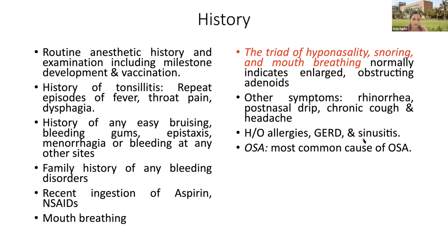In history, we assess routine anesthetic history like developmental milestones, vaccination status, history of repeated tonsillitis episodes including fever, throat pain or dysphagia, easy bruisability, bleeding gums, epistaxis, family history of bleeding disorders, and recent ingestion of aspirin or NSAIDs. Mouth breathing should be excluded, and the triad of hyponasality, snoring, and mouth breathing indicates enlarged obstructing tonsils and adenoids. Other symptoms include rhinorrhea, post-nasal drip, chronic headache, chronic cough, allergies, GERD, and sinusitis.